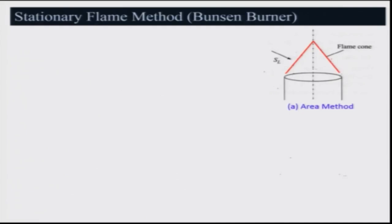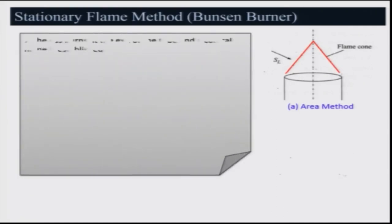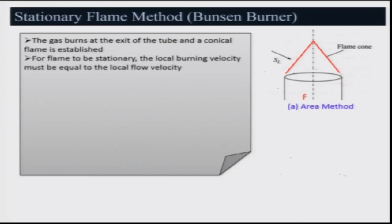We take a photograph of this flame, then measure the area of the flame surface, and from that calculate the average burning velocity of the flame. A conical flame is established at the exit of a tube in which fully developed flow is ensured and the proper equivalence ratio of fuel and oxidizer is maintained, so that a conical flame can be established.